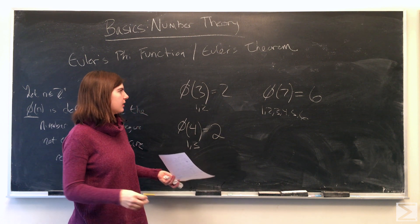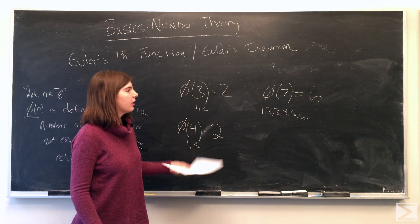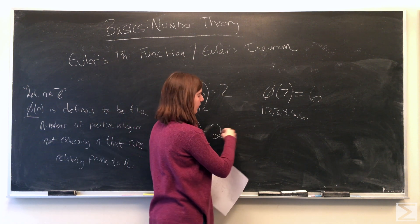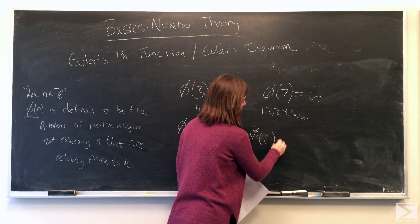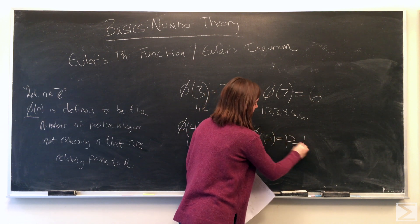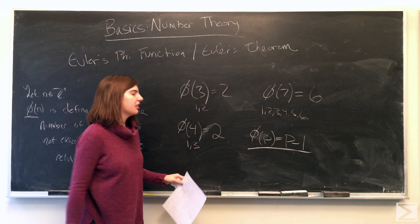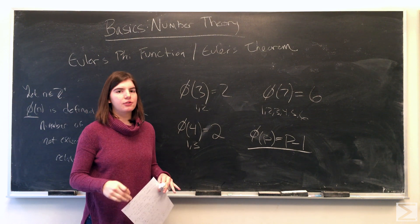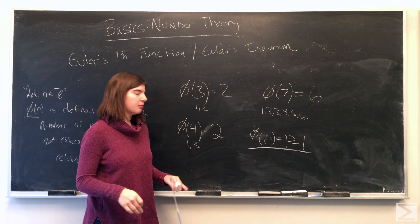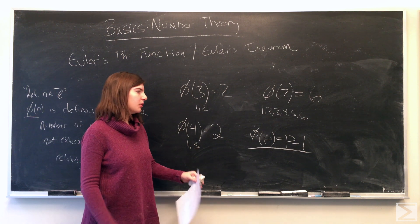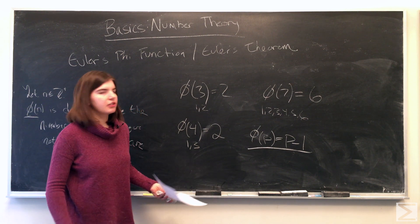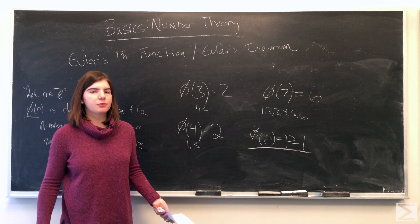If you notice, if you keep going like this, calculating all of them, you'll see that if p is a prime number, then the phi of p is equal to p minus 1. This is because the number of integers that are not exceeding p are p minus 1, and they are all relatively prime to p. So this makes it easy to calculate the phi of really large prime numbers.